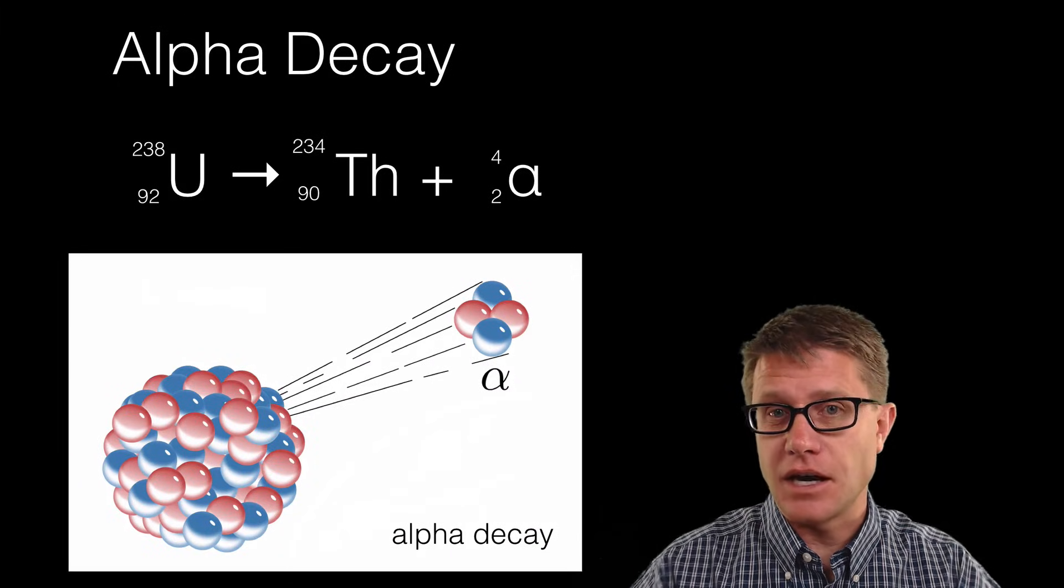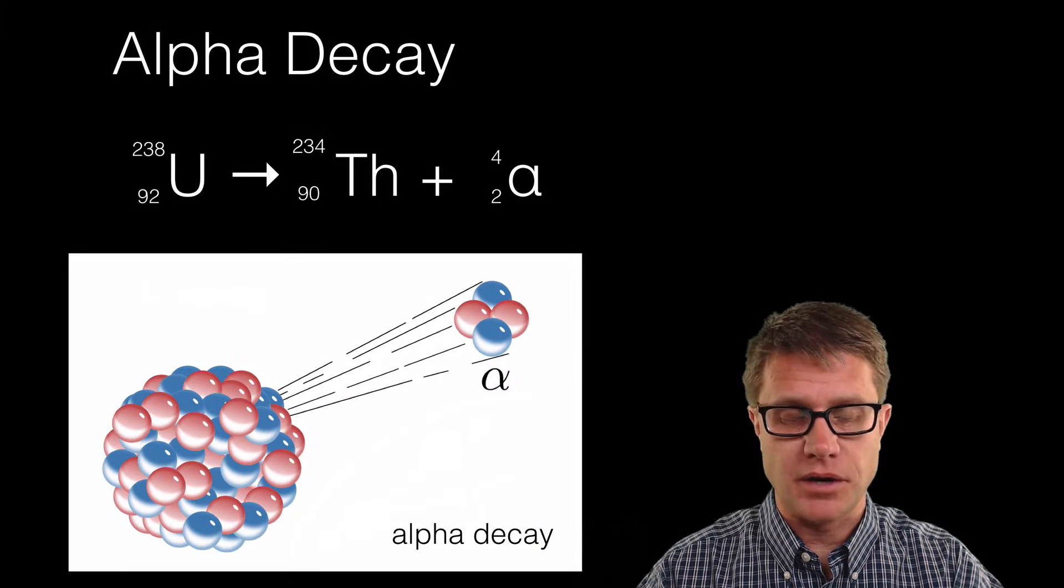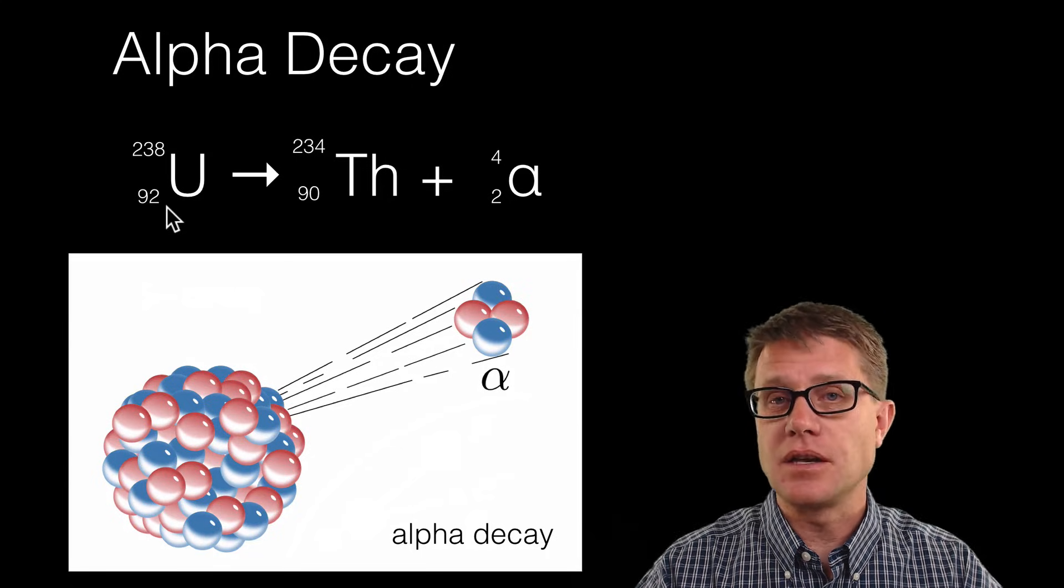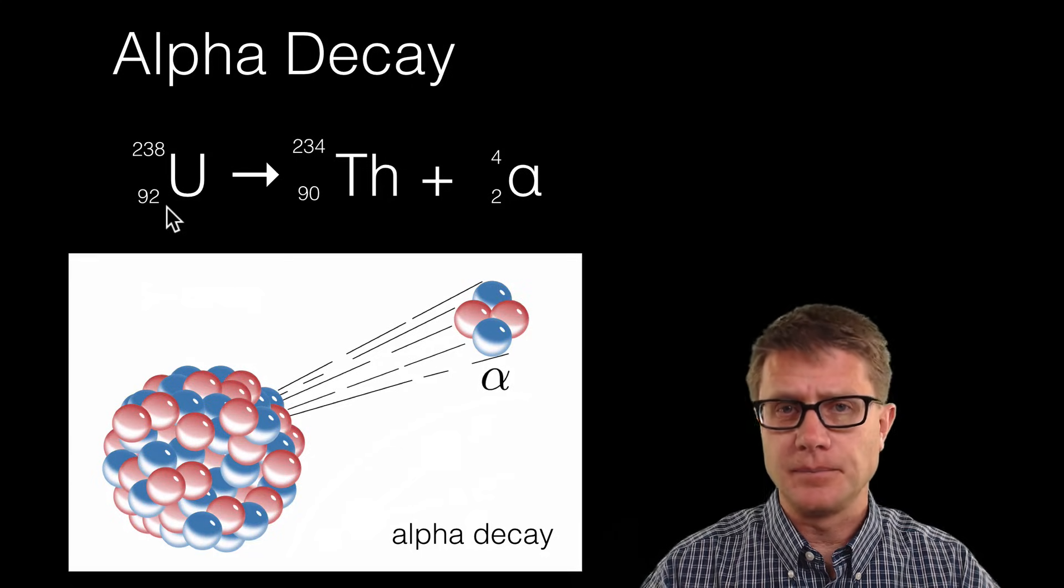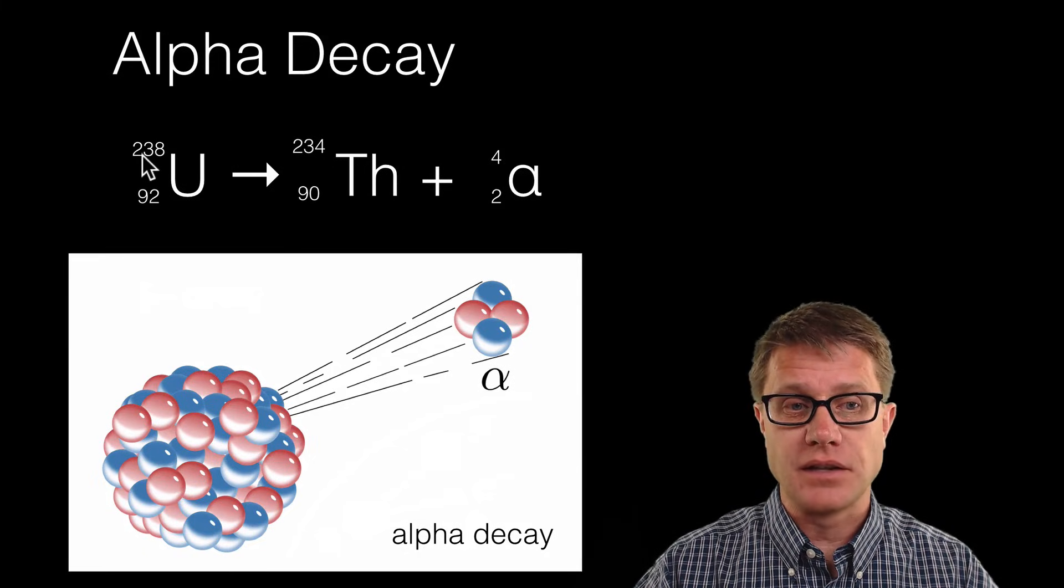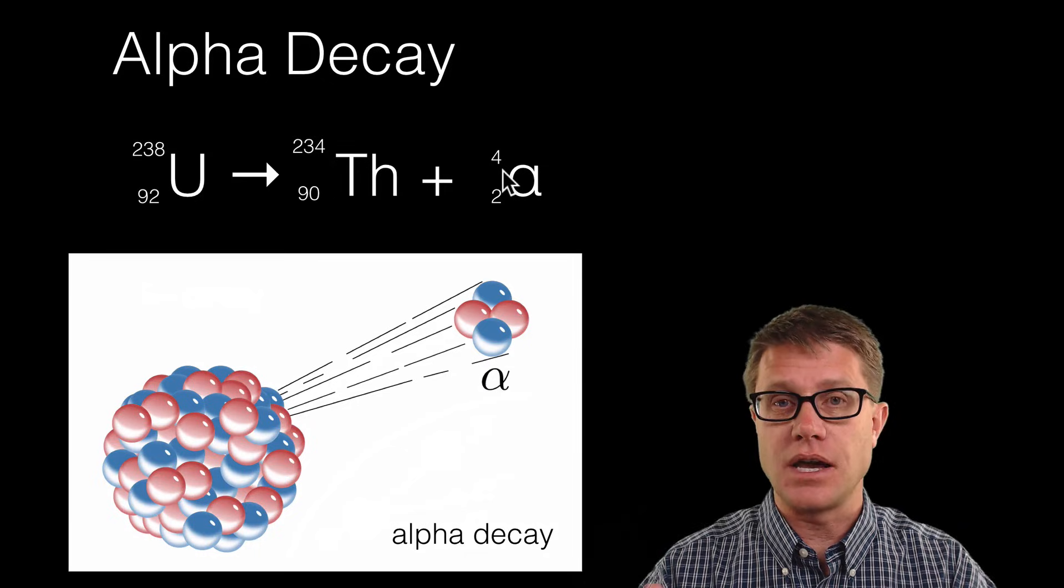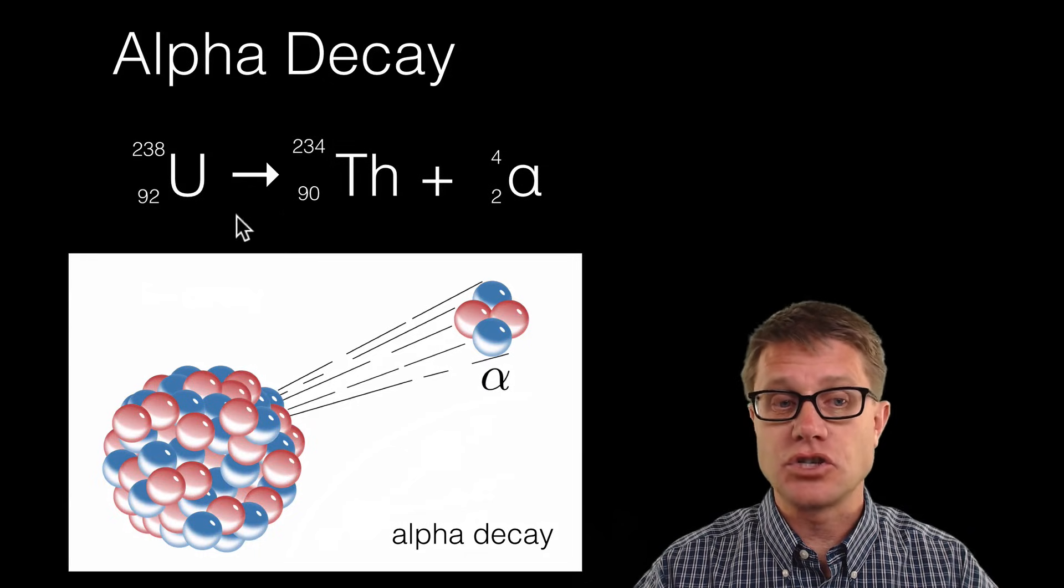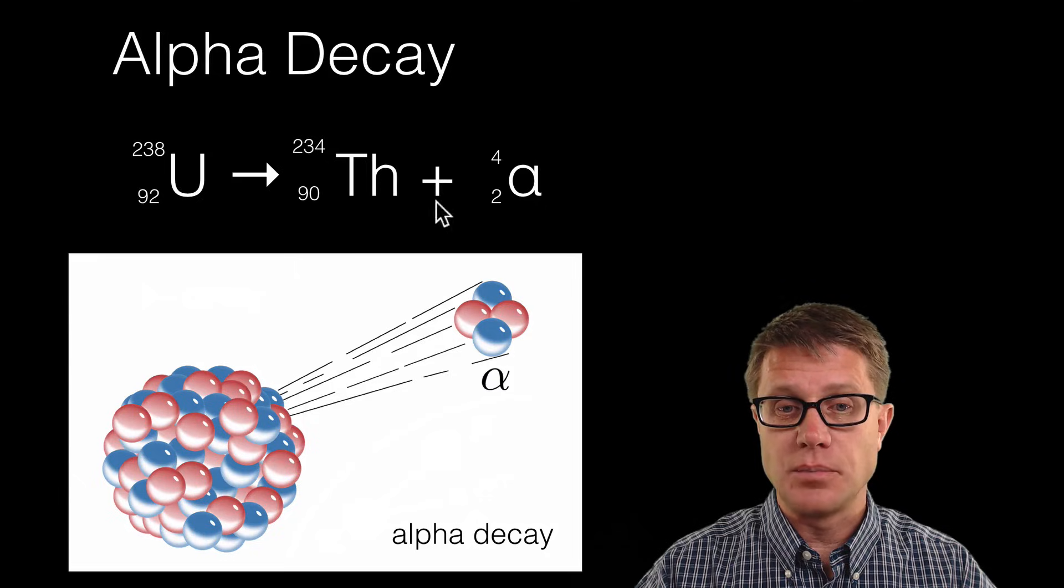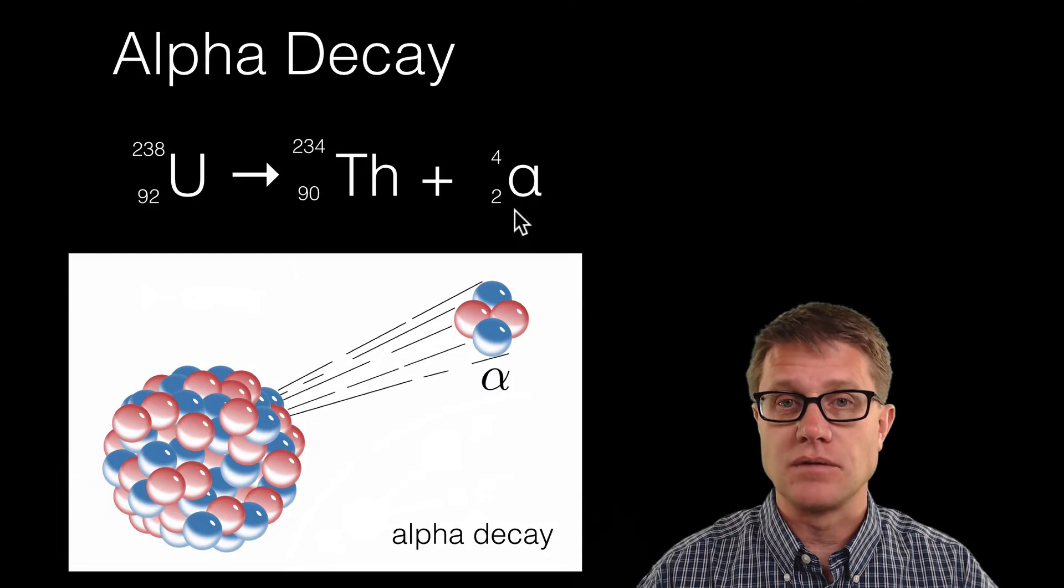Now each form of radioactive decay is going to kick off a different particle. Let's start with alpha particle. An alpha particle is two protons and two neutrons. If we look at the alpha decay of uranium-238, let's make sure that the mass is conserved. Mass on the left side is 238, mass on the right side is 238, so we are fine there. Let's make sure charge is conserved. 92 positive charge on the left, 92 positive charge on the right, so that is conserved as well.